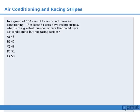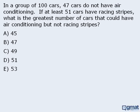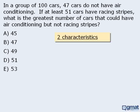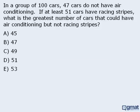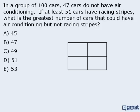In this question we have a population of cars, and there are two characteristics associated with each car: having or not having air conditioning, and having or not having racing stripes. As such, we might be able to solve this question using the double matrix method.